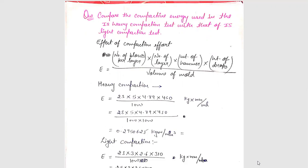E equals to number of blows per layer into number of layer into weight of hammer into height of drop upon volume of mold. All values of heavy compaction and light compaction, both we discussed in the previous session. So this is not a hard numerical to find out the compacted energy. It is an easy numerical.